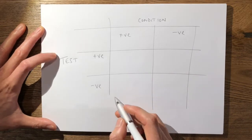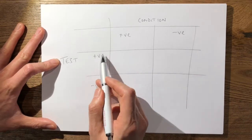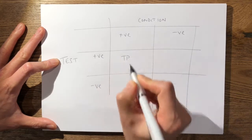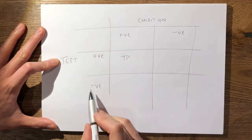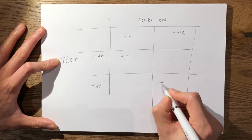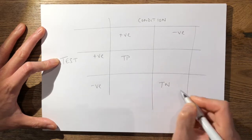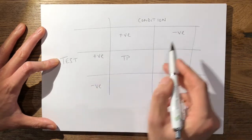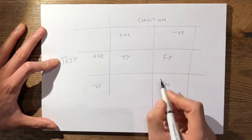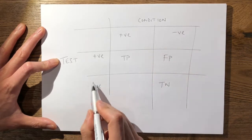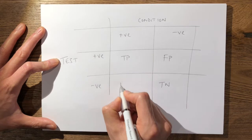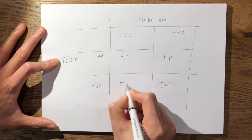If your test is positive and the patient does have the condition, it's a true positive. If they test negative and they don't have the condition, this is a true negative. If they test positive and they don't have the condition, this is a false positive. And if they test negative and they do have the condition, this is a false negative.